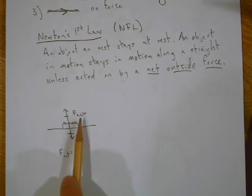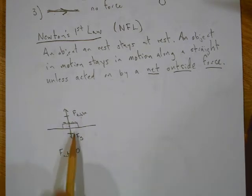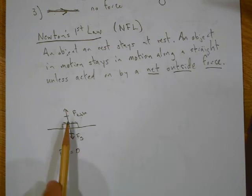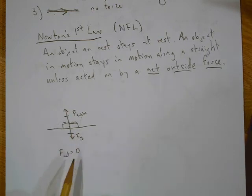So in this case, if I have the table and the force of gravity, if they're going opposite ways, they're going to cancel each other out, so the net force is zero.